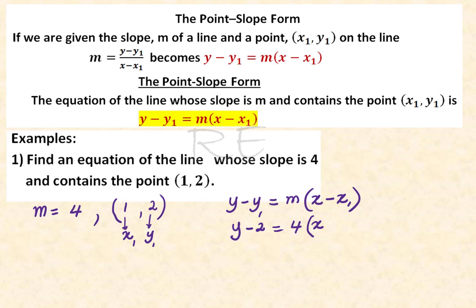Y minus 2 is equal to 4 times x minus 1. Y minus 2, when we distribute, will be equal to 4x minus 4. Now we just have to add 2 to both sides and we are done. Y is equal to 4x minus 2.